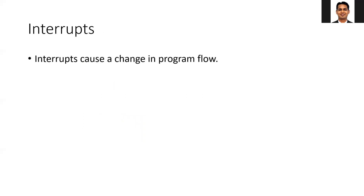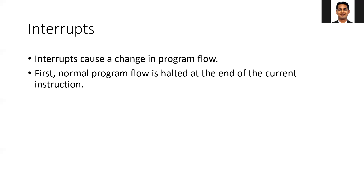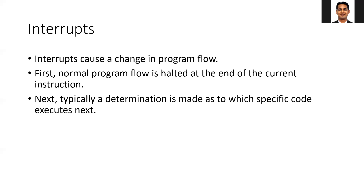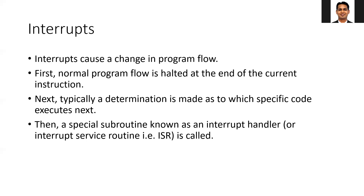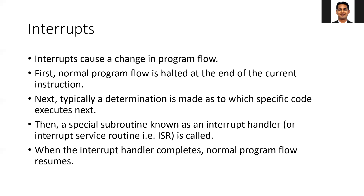An interrupt will cause a change in the program flow. Whenever the interrupt is received by the processor, it needs to understand who sent it and what action needs to be taken to process it. First, the normal program flow completes the current ongoing instruction. Then the processor stores the necessary data so that after interrupt processing it can return to the normal flow. The processor then executes specific code called the Interrupt Service Routine (ISR) for that particular interrupt. When the ISR is done, execution returns to the normal program flow.